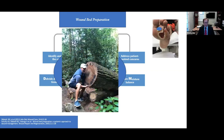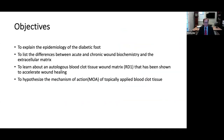But sometimes, despite even our best efforts, treating these chronic wounds are very much like lifting a 200-pound tree stump. These are often very difficult to treat, challenging to heal. Our objectives for this lecture are fairly straightforward: we're going to explain the epidemiology of the diabetic foot, list the differences between acute and chronic wound biochemistry, talk about the extracellular matrix — a very important structure in the skin — learn about autologous blood clot tissue and what this matrix does to accelerate wound healing, and hypothesize the potential mechanism of action of this topically applied blood clot tissue.